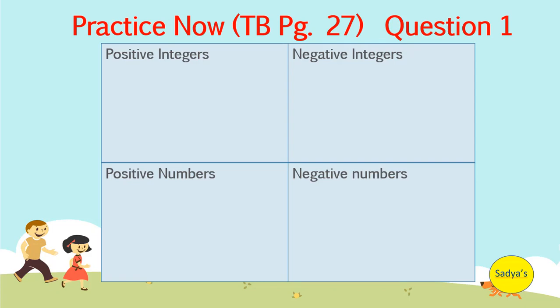Let's solve question number 1 of practice now given on textbook page number 27. We are given some numbers and we have to identify their type. Negative 5. Negative sign with the number indicates it is a negative number and since negative 5 is neither fraction nor decimal, so it is also a negative integer.